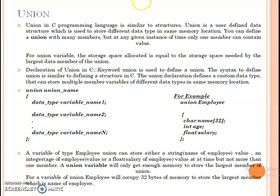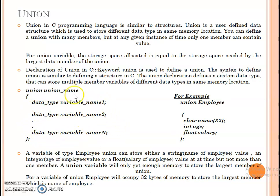For example, we can define the name and syntax of a union. We define the union name, followed by the data type and variable names: data type variable name 1, data type variable name 2, and data type variable name N. The syntax is similar to a structure.